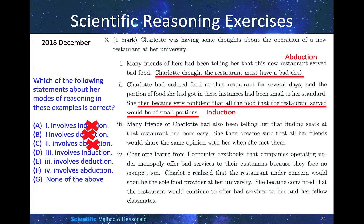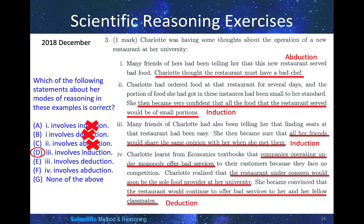Many friends of Charlotte had been telling her that finding seats at that restaurant was easy. She then became sure that all her friends would share the same opinion when she met them. This is also induction, because based on a small amount of data she made a generalization about all her friends. Charlotte also learned from economics textbooks that companies operating under monopoly offer bad services because they face no competition. Realizing the restaurant would soon be the sole food provider at her university, she became convinced it would continue to offer bad services. This is deduction.